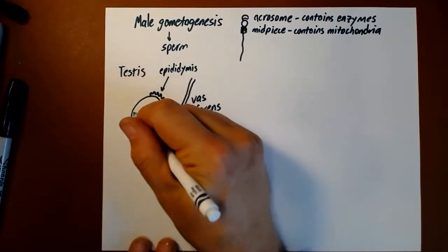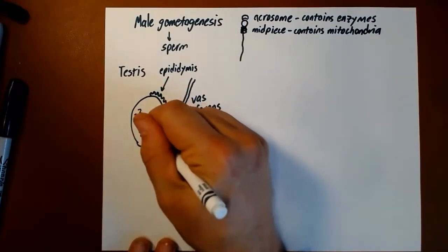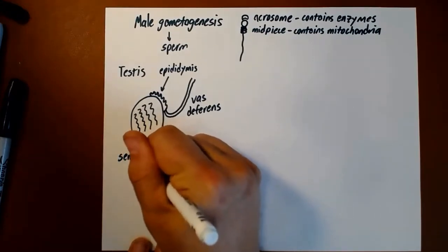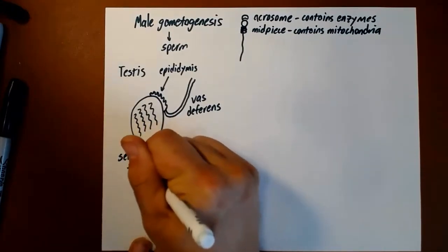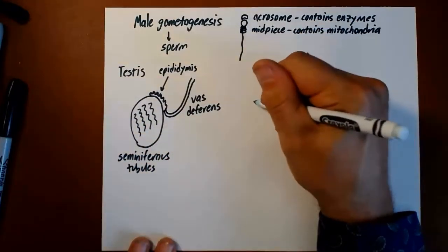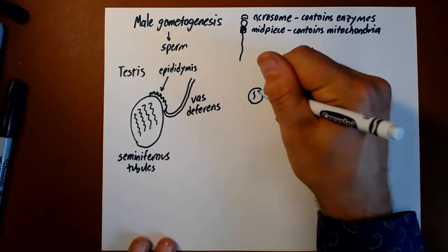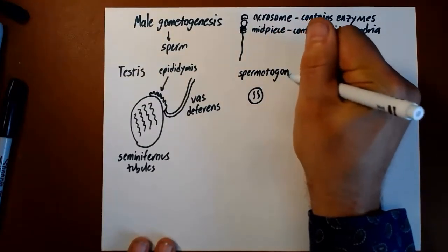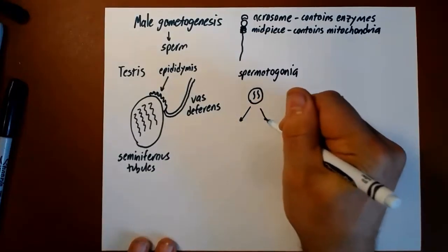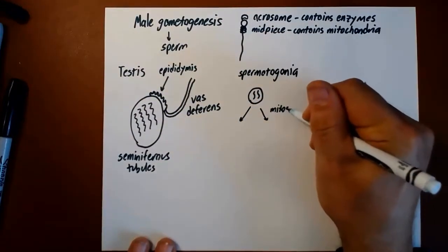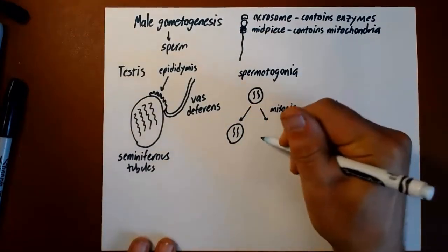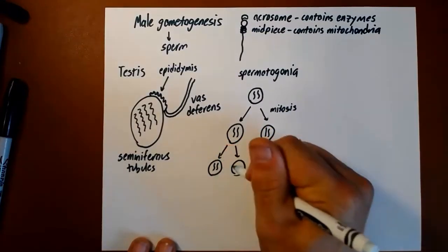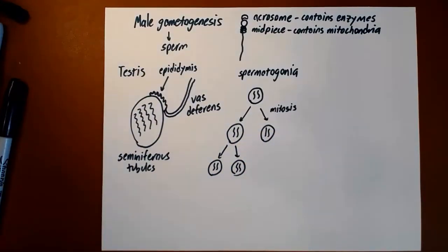Here inside the testes we've got lots of these coiled things called seminiferous tubules. It's in between these where the sperm are made. In here we've got diploid cells called spermatogonia. The spermatogonia can divide by mitosis, that's regular cell division, to produce more spermatogonia. They can keep making more spermatogonia, cloning themselves effectively.